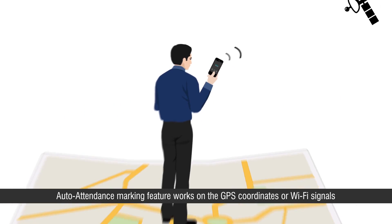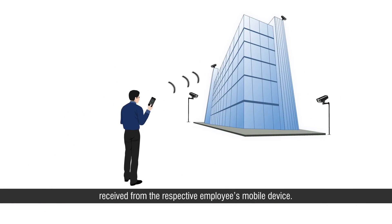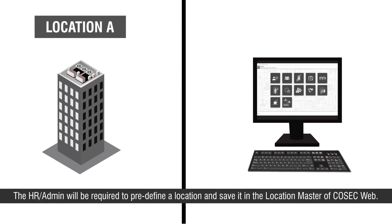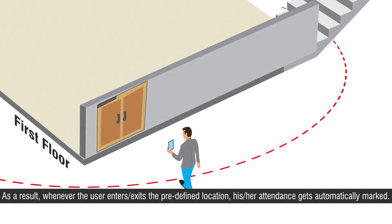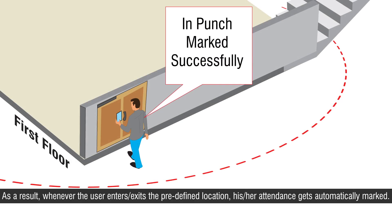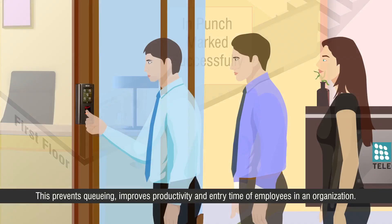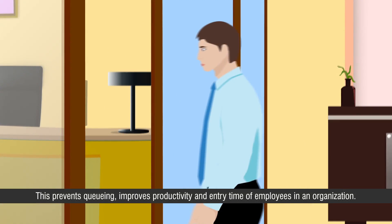The auto attendance marking feature works on the GPS coordinates or Wi-Fi signals received from the respective employee's mobile device. The HR or admin will be required to pre-define a location and save it in the location master of Cosec Web. As a result, whenever the user enters or exits the predefined location, his or her attendance gets automatically marked. This prevents queuing, improves productivity, and entry time of employees in an organization.